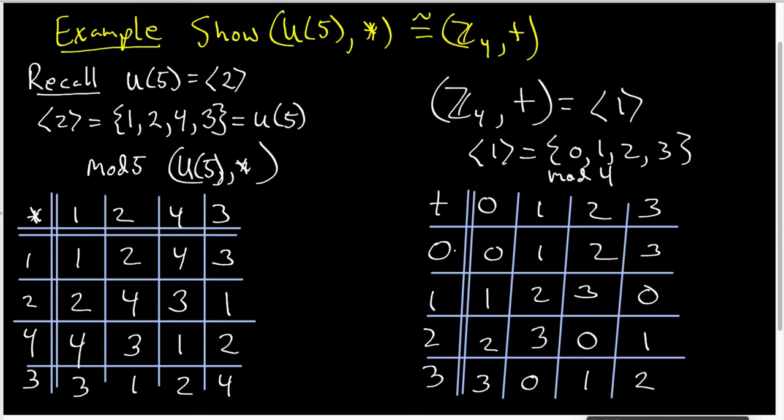Now what I want to do is try and see how these two tables have the same structure. And what I'm going to do is I'm going to highlight things. The identity element over in the U5 table is named 1, and the 1s appear in the places where I have highlighted in that purple color. And you'll notice that the 1s in the U5 table occur in exactly the same places that the 0s occur in the Z4 table.